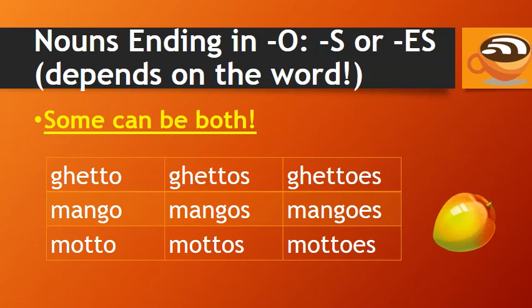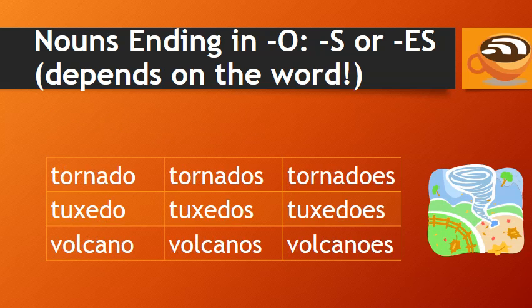With some nouns ending in O, we can form the plural both ways. For example: ghetto, ghettos or ghettoes; mango, mangoes; motto, mottos; tornado, tornadoes; tuxedo, tuxedos; volcano, volcanoes.